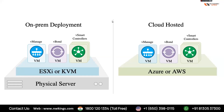vBond handles authentication once per session. Once a device is authenticated to vBond, it connects to vManage and vSmart using their IPs without further authentication. vBond is a separate device used only in SD-WAN — it is different from ISE.